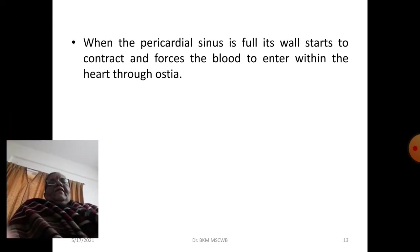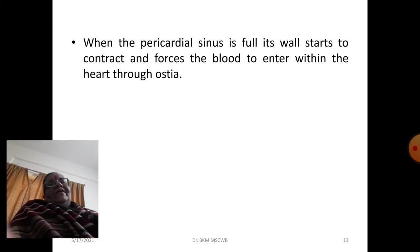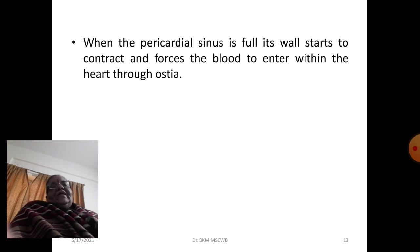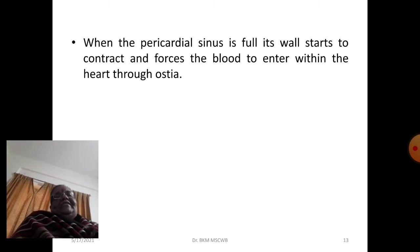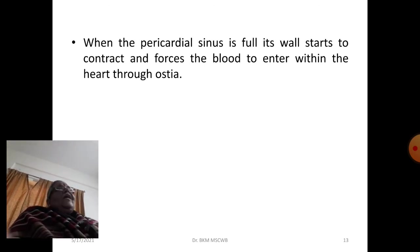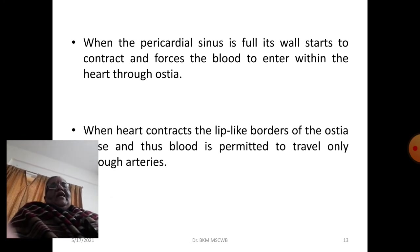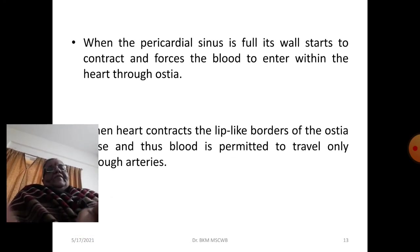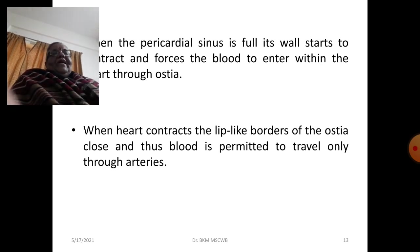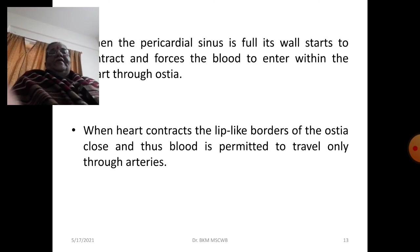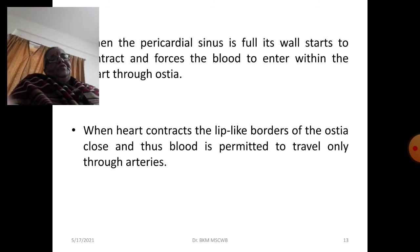When the pericardial sinus is full, it contracts and forces blood to enter the heart through the ostia. When the heart contracts, the lip-like borders of the ostia close and blood is permitted to travel only through the arteries, preventing backflow of blood into the pericardial sinus.